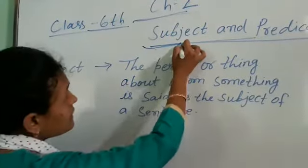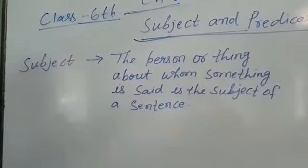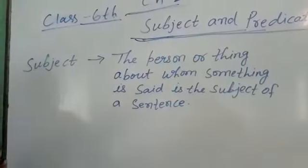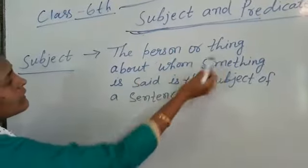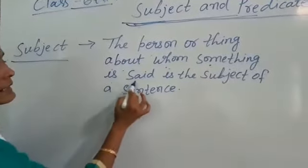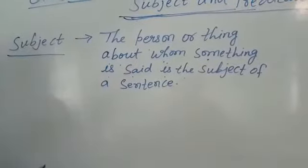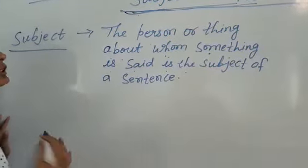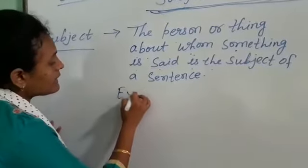In the previous class, you learned what is a sentence. Now we will study the parts of a sentence. The first one is subject. The person or thing about whom something is said is the subject of a sentence. It means whichever person or thing does something is called the subject.